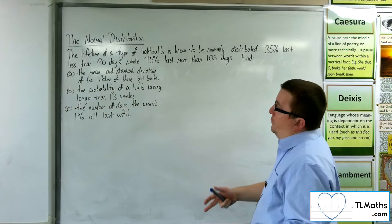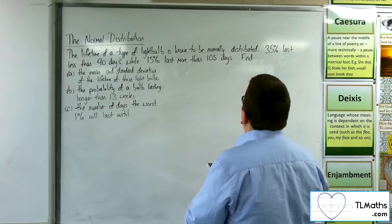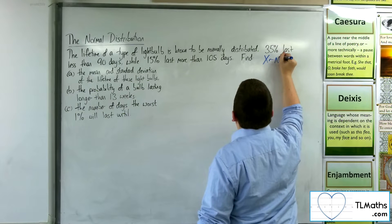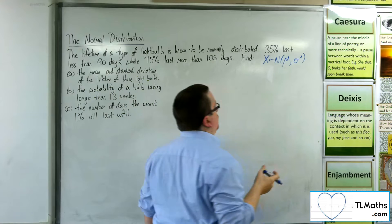Find, first of all, the mean and standard deviation of the lifetime of these light bulbs. So at the moment we know that x is normally distributed, but we don't know the mean and we don't know the standard deviation or variance.